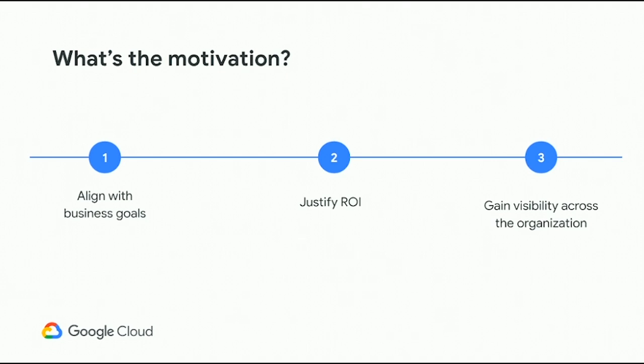What's the motivation behind trying to make sure that an API program is successful? Clearly, there is someone investing money in it — the enterprise is making an investment, so it has to align with business goals. Secondly, you want to be able to justify the return on investment. And last but not least, is to have the right level of visibility.